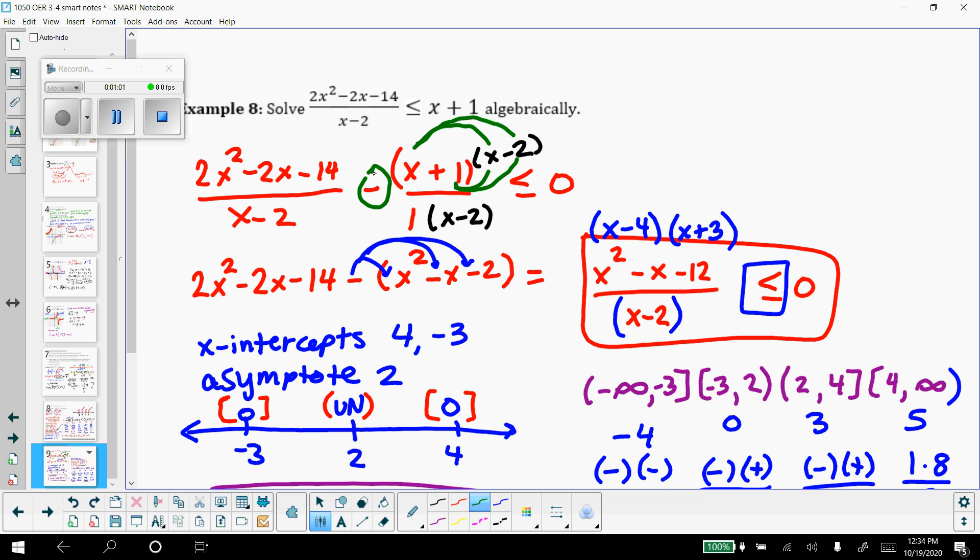Or less than or equal to 0. And all I have to do is factor that numerator, it's not hard factoring, into x minus 4 and x plus 3. So then we have three critical values.